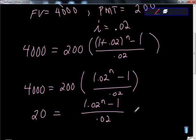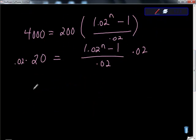This is just how I chose to do it. You can multiply both sides by 0.02. Should give us 0.4. So 0.4 equals 1.02 to the nth power minus 1, because these canceled each other.